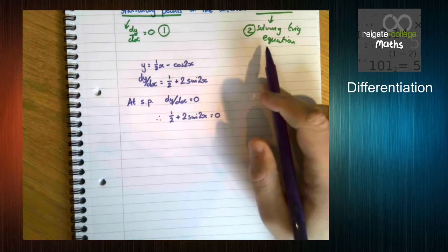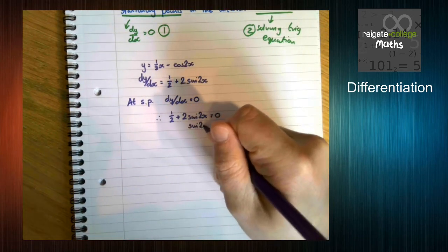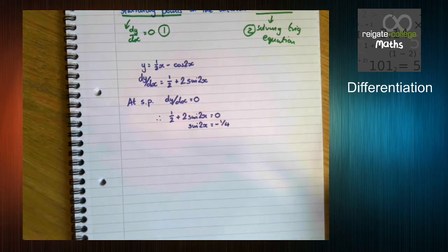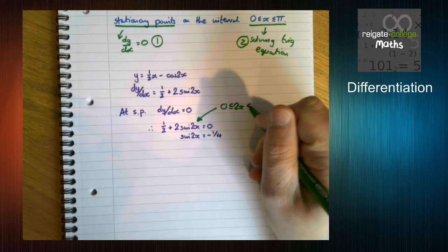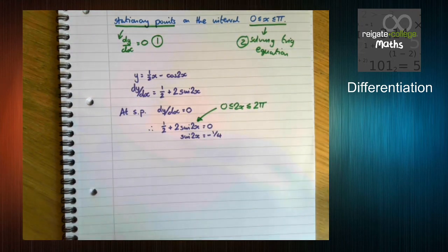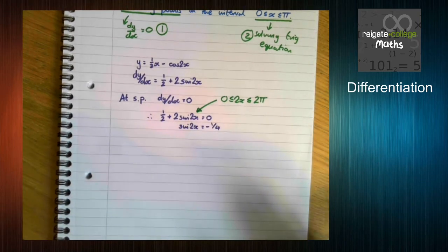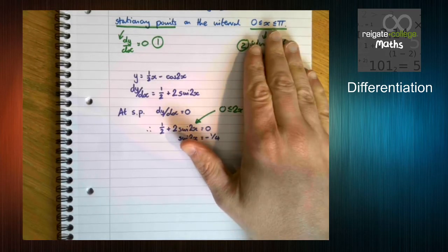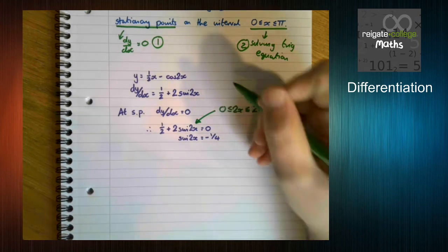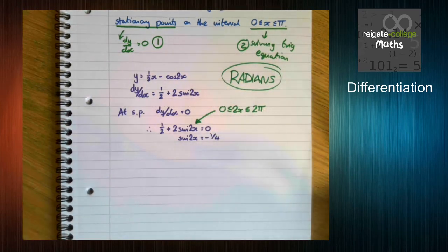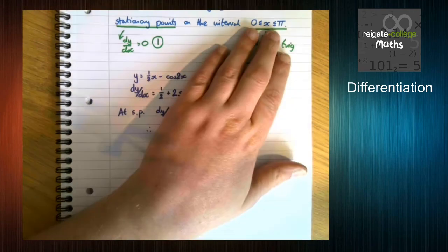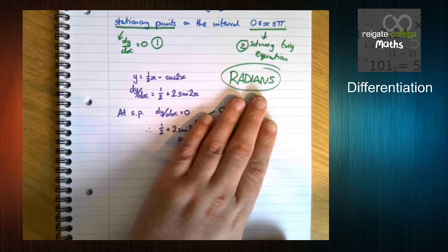Rearranging, sine 2x equals minus a quarter. Pay attention: we're solving for x between 0 and π, but since we have 2x, we solve for 2x between 0 and 2π. It's also very important that you must always work in radians when differentiating or integrating with trig — this is always the case, regardless of whether the question states it.